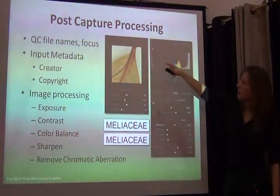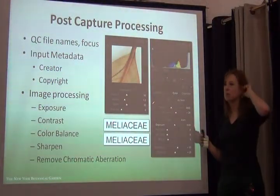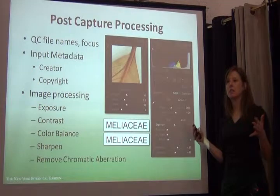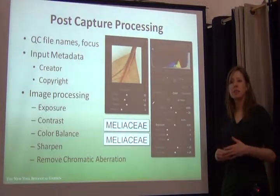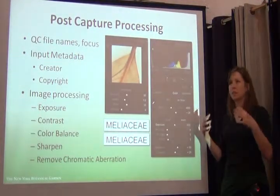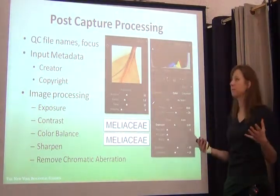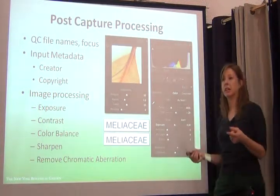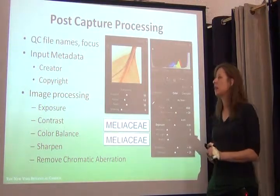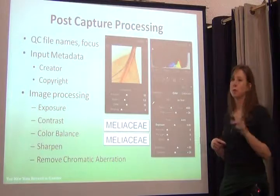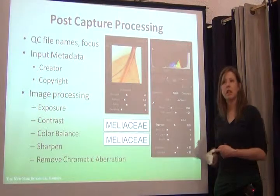Lightroom allows me to check file names and focus, and I can add information — embed metadata into the images. In addition to the date, time, camera, and lens, we can embed additional information such as the creator — the person who digitized the specimen — and the copyright, in our case the New York Botanical Garden. If you're embedding metadata into field photos, you might want to embed locality information, collector, and collection number.